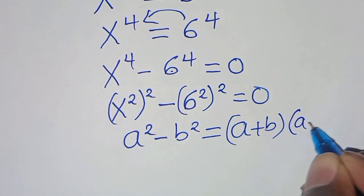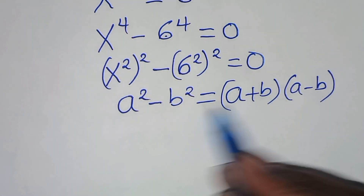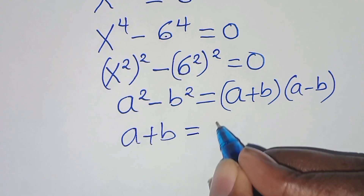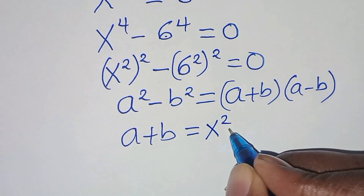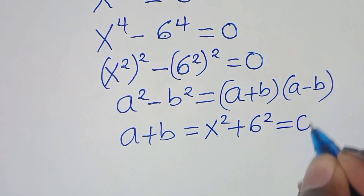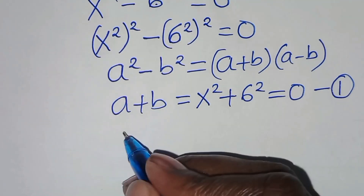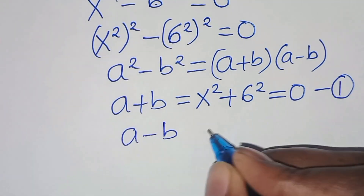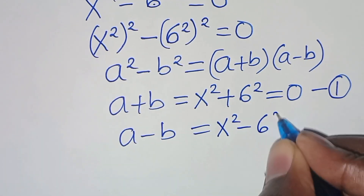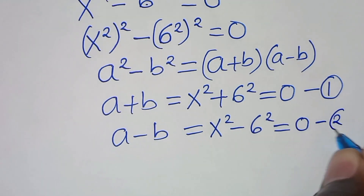The difference of two squares a squared minus b squared factors as (a plus b)(a minus b). So this gives us (x squared plus 6 squared) equals 0 — call this equation 1 — and (x squared minus 6 squared) equals 0.